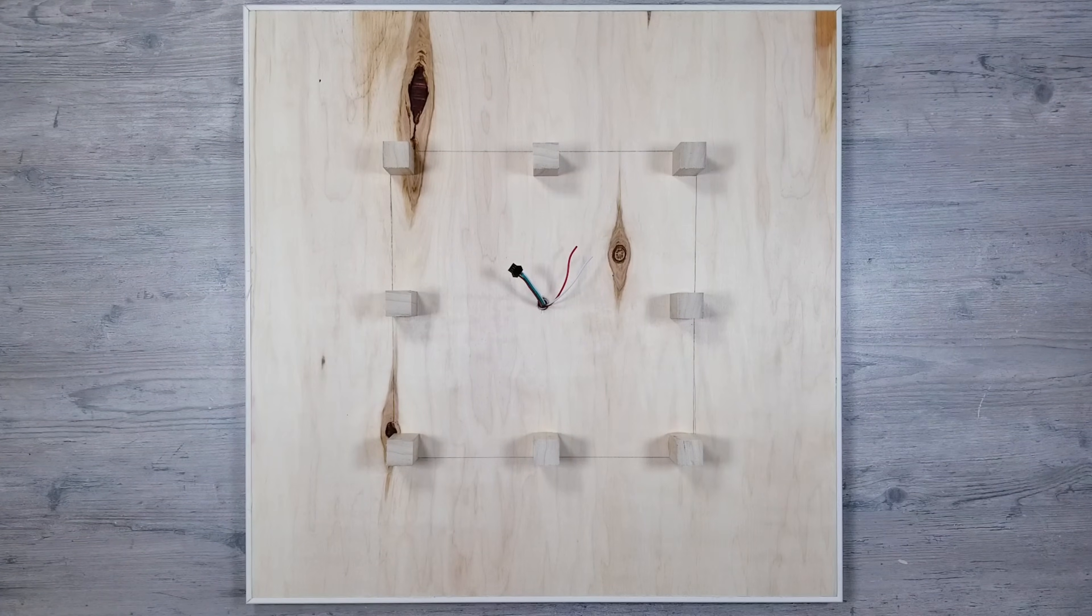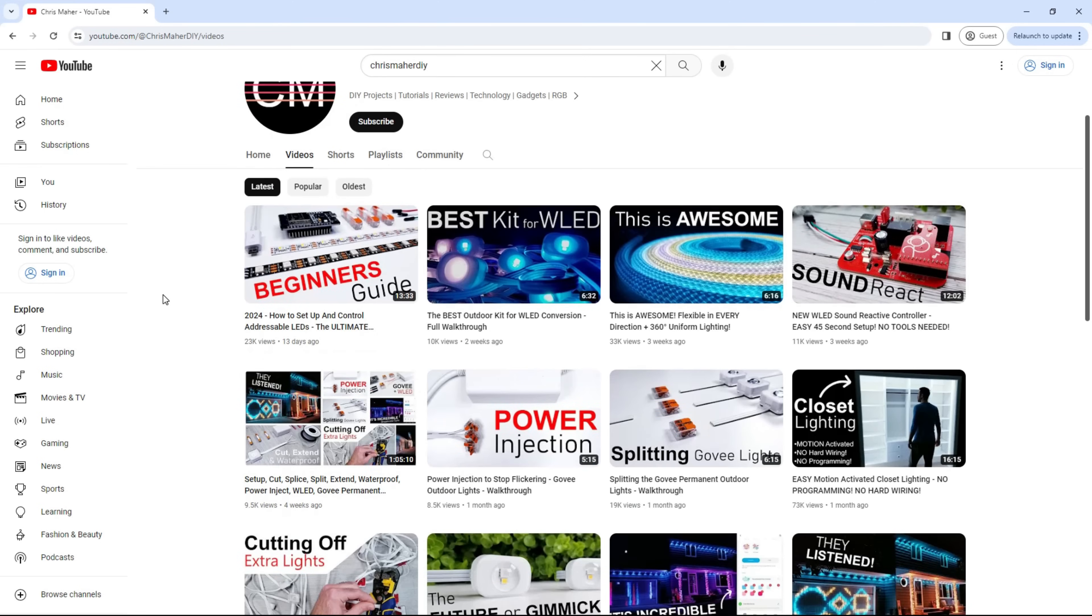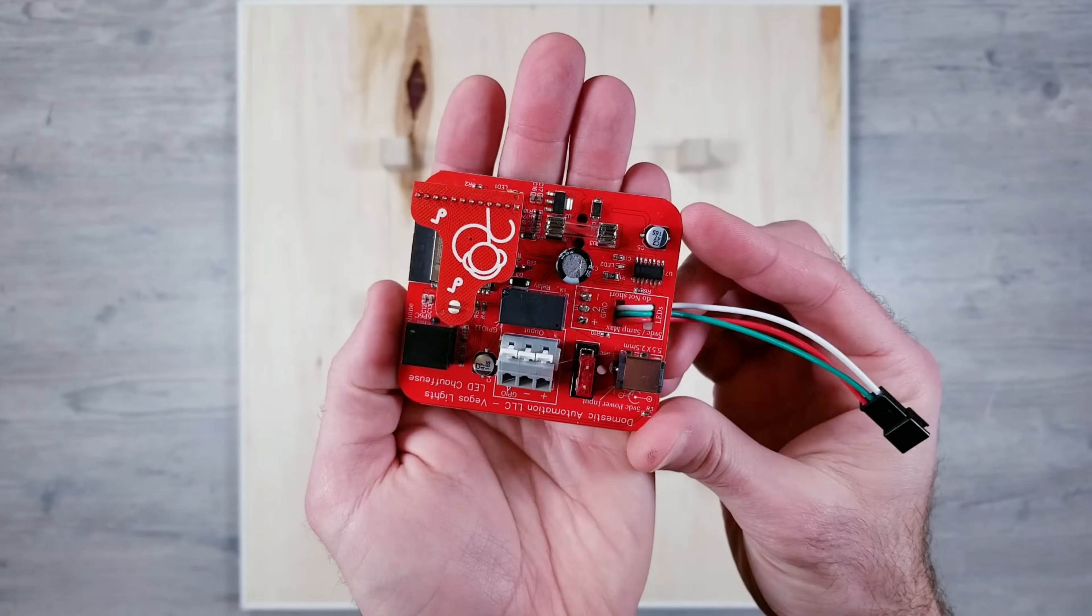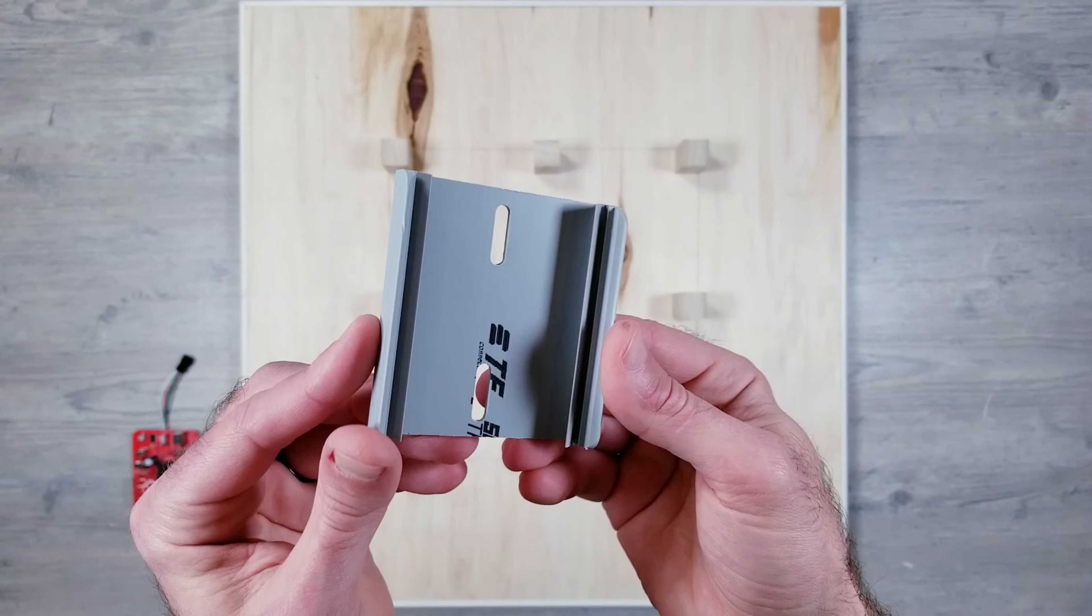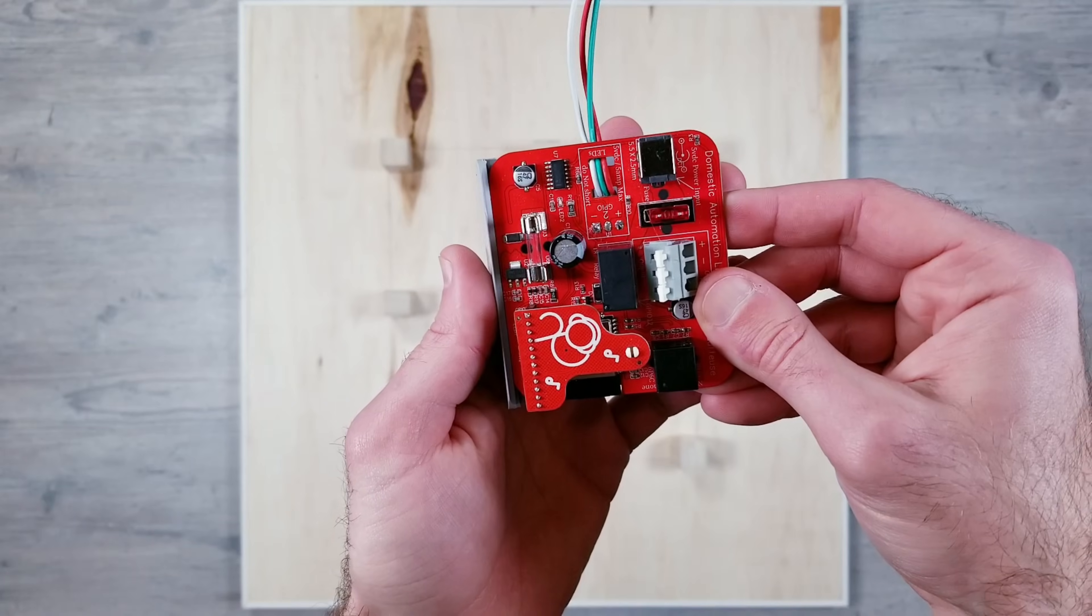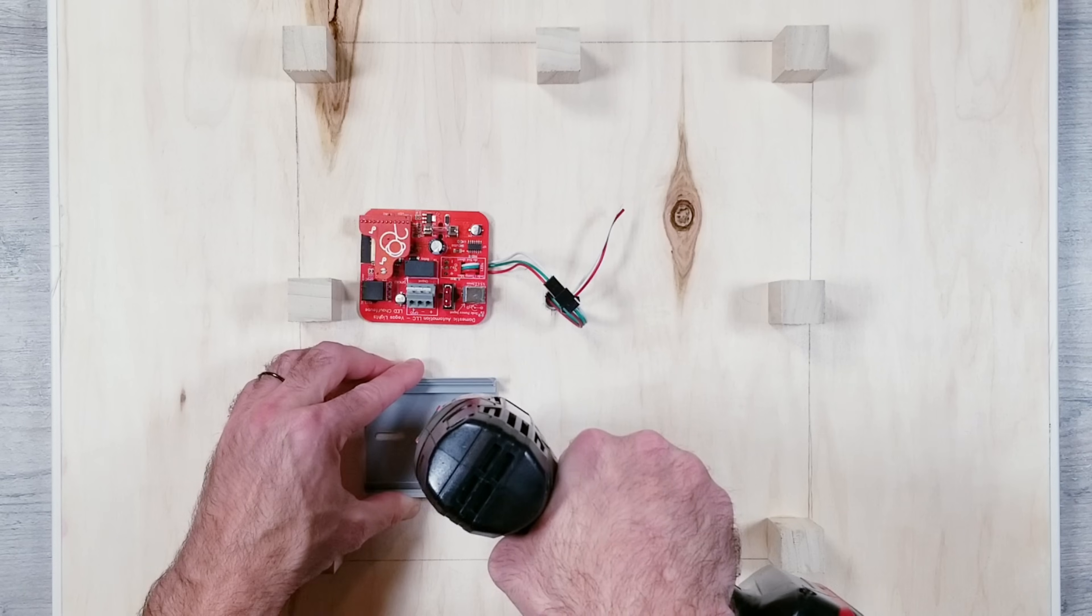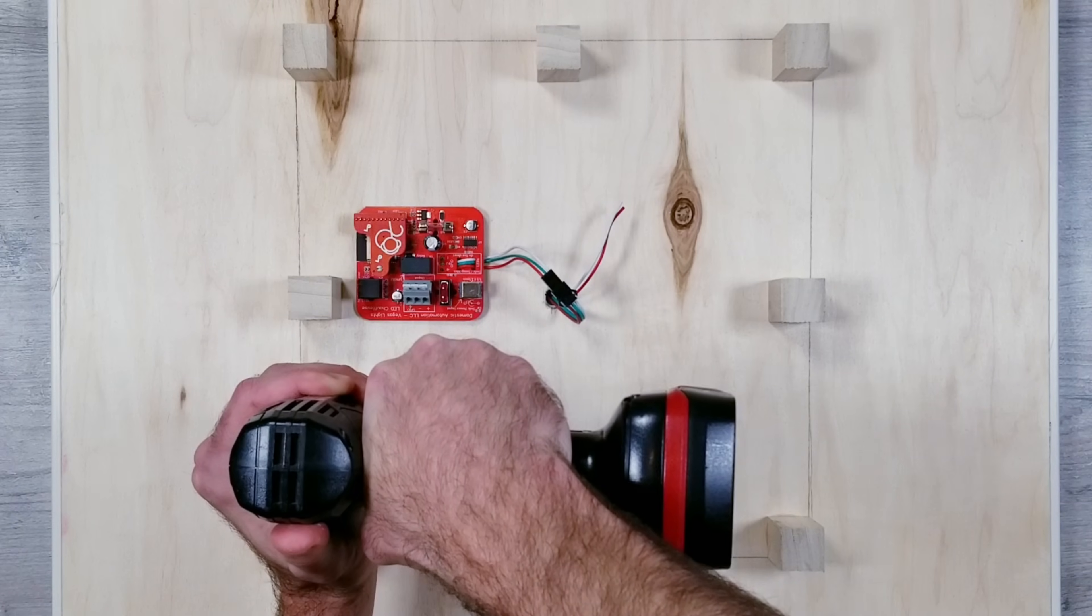So moving on to the controller, you could go in many different directions here. If you wanted to use an ESP32 with WLED installed, I just made a new video on the complete steps of getting that setup from scratch that I highly recommend watching if you wanted to go that route. But to make things as easy as possible, I'll be using this plug and play controller from Domestic Automation that comes pre-installed with WLED Sound React. And every unit comes with this plastic track that you can snap the module into it, making it easy to mount anywhere you'd like. I'm going to screw this gray piece down, re-attach the board, and plug the lights into the JST connector.